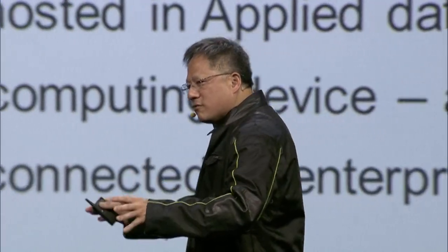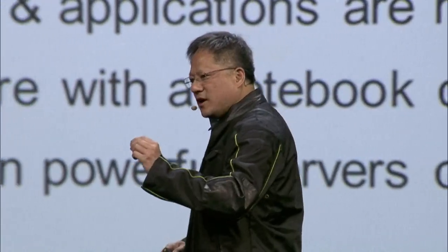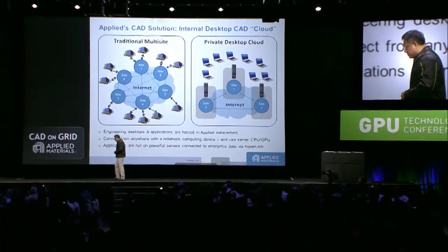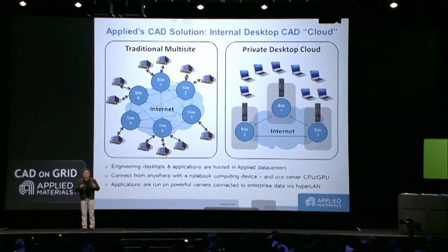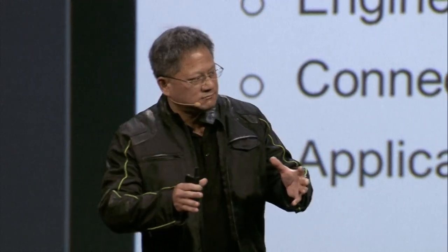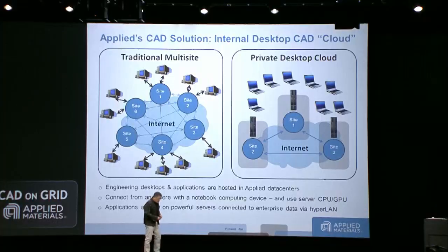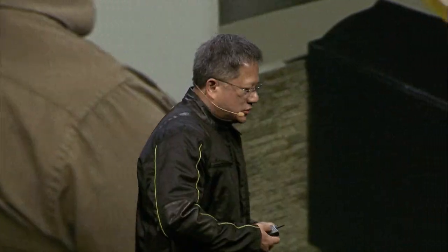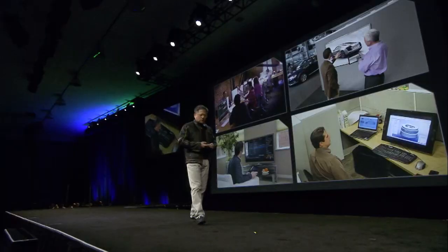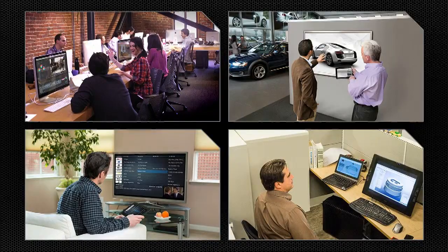We're now in production with Grid enterprise servers — this is for large-scale enterprise computing where people have IT departments and want to work on large data, collaborate, and be able to do their work on any device from anywhere. But there are some people whose work can't be solved this way. There are many small and medium businesses around the world designing gadgets, creating commercials, outsourcing for large enterprises, creating parts of a movie. They're a small, medium business.